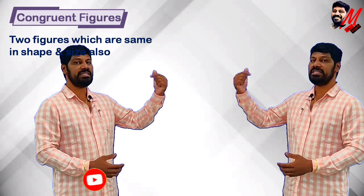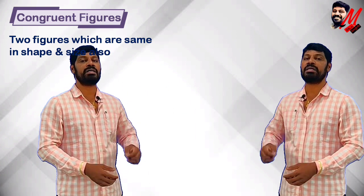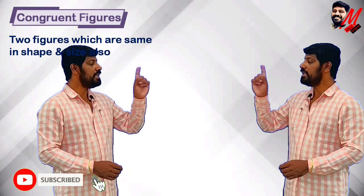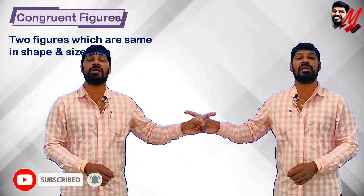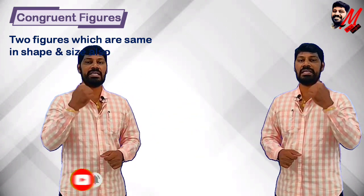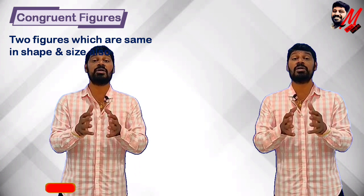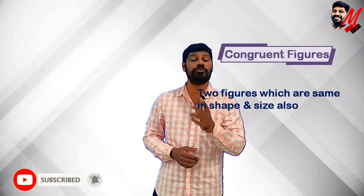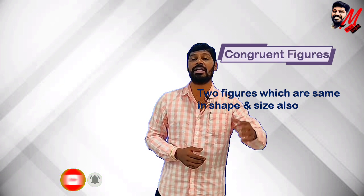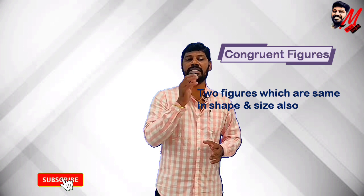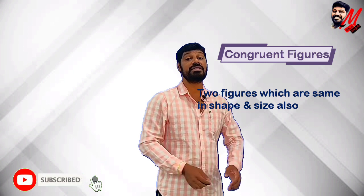That image is exactly what we have as congruent figures. Congruent figures are two figures which are in the same shape and same size. These figures that are different in size are not congruent — that is a simple thing to understand.